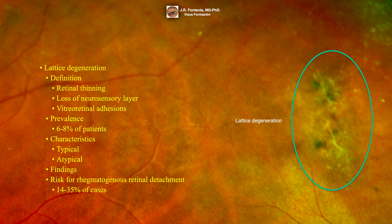There is a risk of rhegmatogenous retinal detachment due to vitreous traction or atrophic holes. Retinal detachment is found in 14-35% of cases. Prophylactic laser treatment is commonly recommended in patients with vitreous traction and retinal tears associated with flashes and floaters.